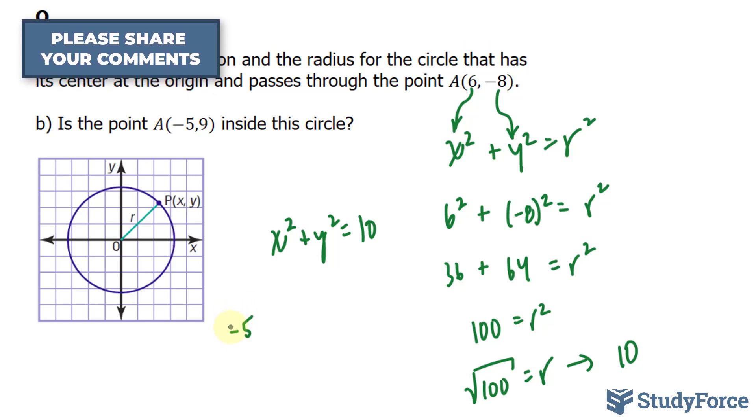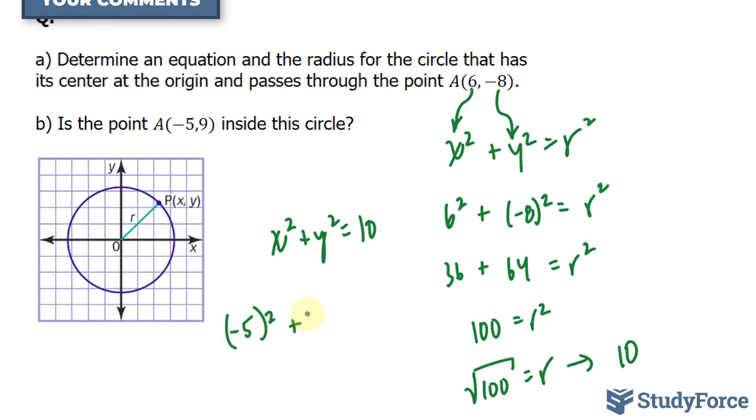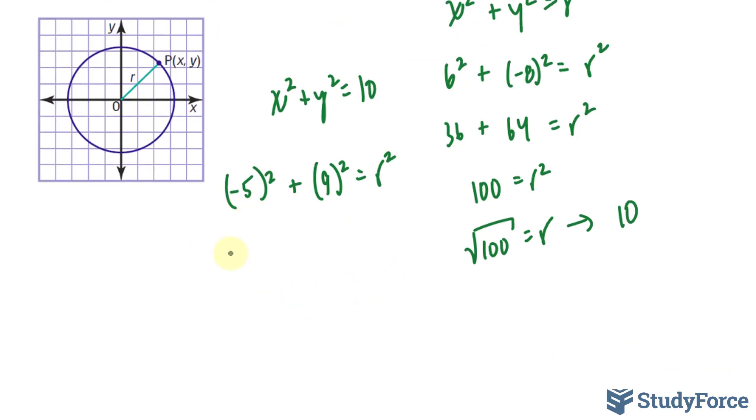We have minus 5 to the power of 2 plus 9 to the power of 2. That's equal to r squared. 25 plus 81 is equal to r squared. 25 plus 81 is greater than 100. It's 106.